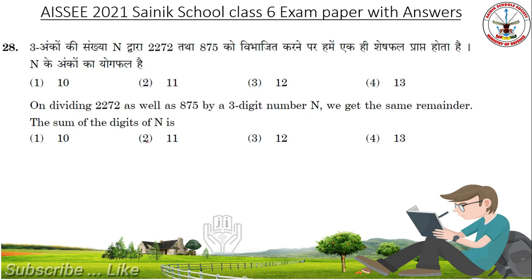On dividing 2272 as well as 875 by a 3-digit number N, we get the same remainder. The sum of the digits of N is. Answer: 10.